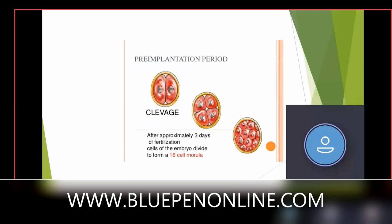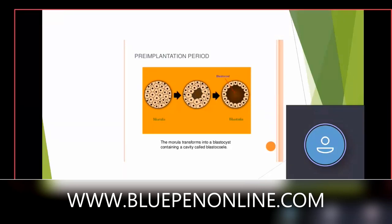After approximately three days of fertilization, cells of the embryo divide to form a 16-cell morula. So the pre-implantation period is when the fertilized ovum undergoes cell division and multiplies to form a 16-cell morula in the span of three days post-fertilization. The morula again undergoes cell division to form a blastocyst containing a cavity called the blastocoel.